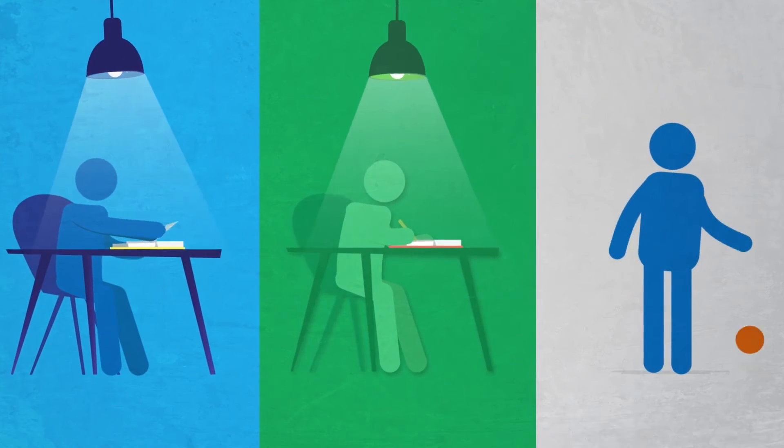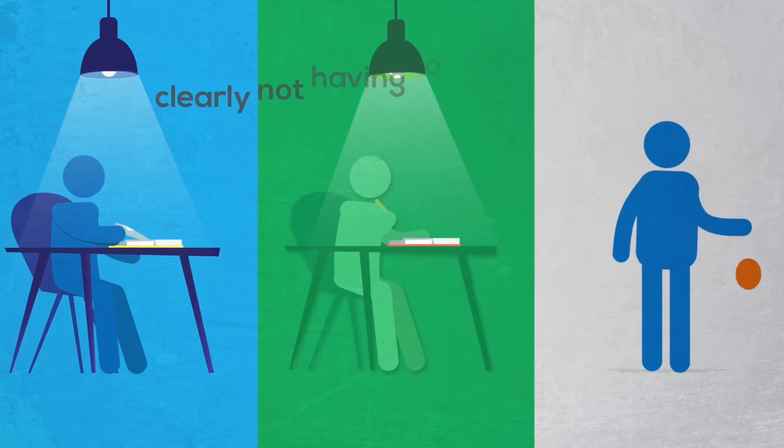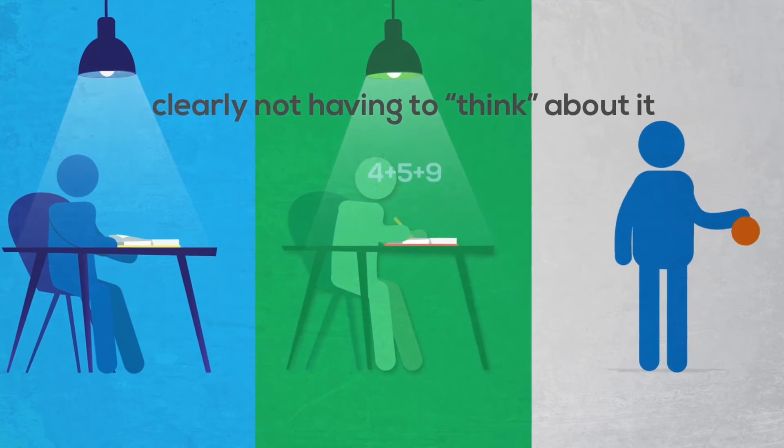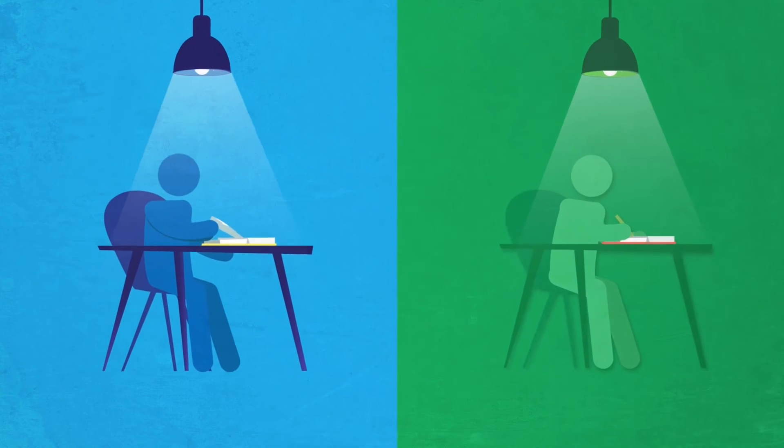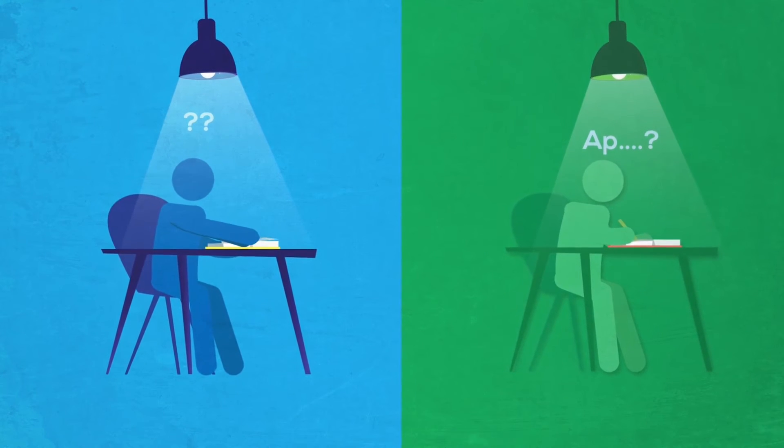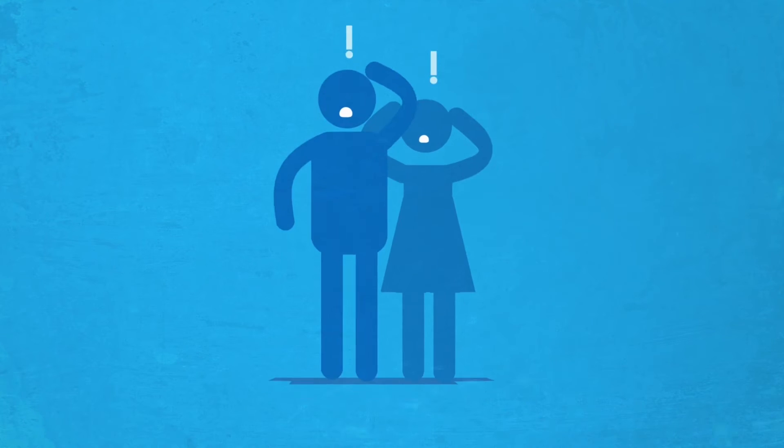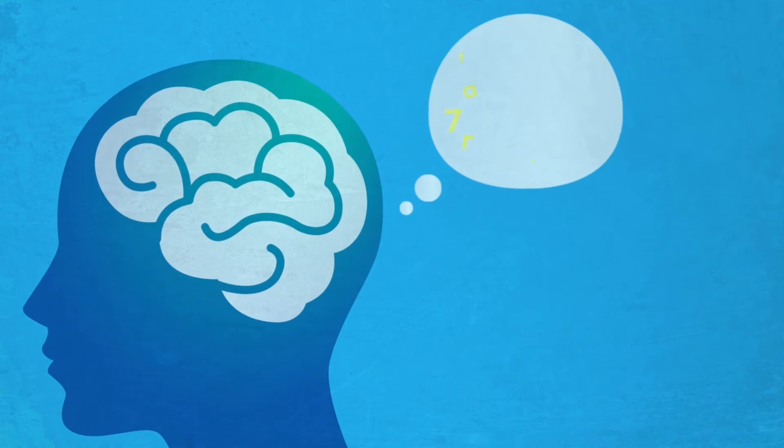But some skills never get fully automated, and if they're skills like reading and writing, that's bad news. Here's the big surprise: when your child's skills are not automated, here is what happens.